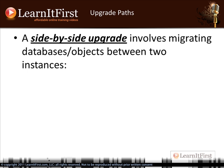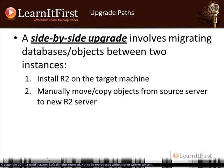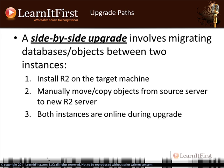A side-by-side upgrade is when you don't necessarily want to upgrade the entire instance, or when you want to upgrade to a new computer. This involves migrating objects between two instances. You go to your target machine — maybe it's a new server, maybe it's the same one — install R2, and then manually move or copy objects from the source to the destination. An 'object' could be a table, a database, a job, a login — it's a generic term covering many different areas.